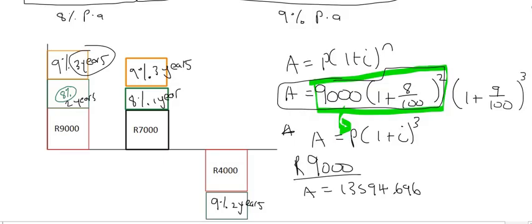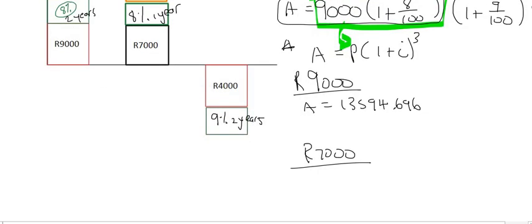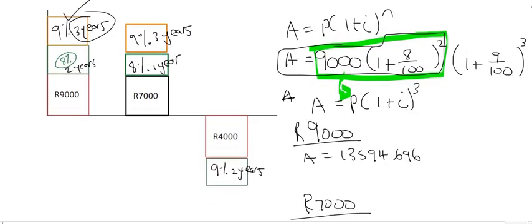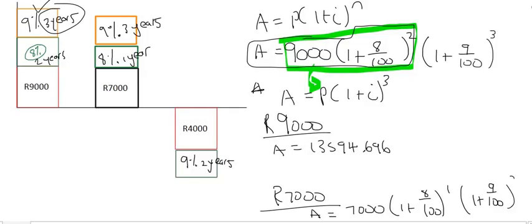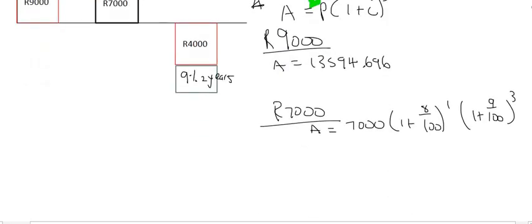Then we do the 7,000 rand. Scrolling up slightly, that's going to equal 7,000 rand grown for one year at eight percent, then three years at nine percent: 7000 × (1 + 0.08)¹ × (1 + 0.09)³. If you type all that on the calculator, the answer is R9,790.419.